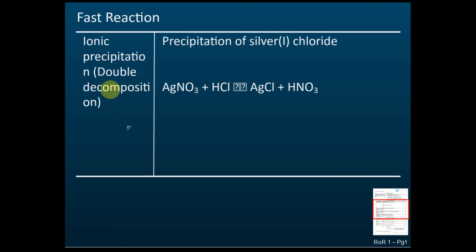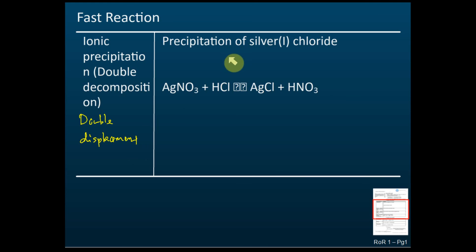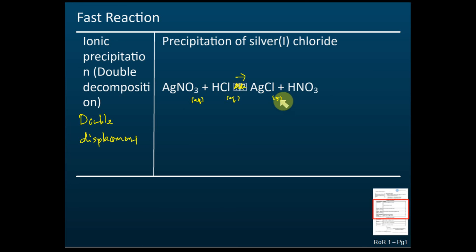The next fast reaction is ionic precipitation, also called double decomposition or double displacement. This is the type of reaction used to prepare insoluble salts, which you learned in chapter 8 of Form 4. For example, silver nitrate reacts with hydrochloric acid — both reactants are aqueous, and one product, silver chloride, is solid. When you add silver nitrate to hydrochloric acid, you can immediately see the precipitate form, confirming it is a fast reaction.